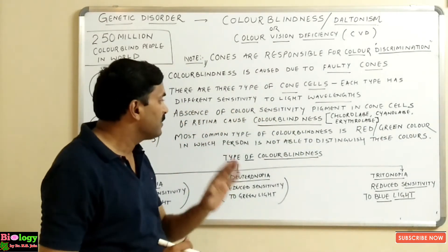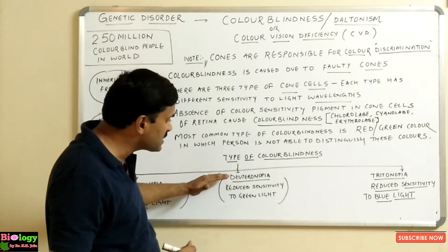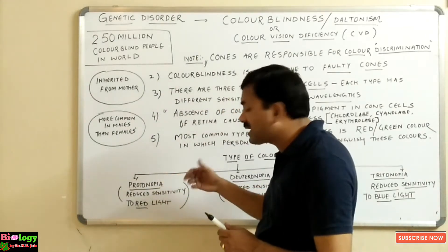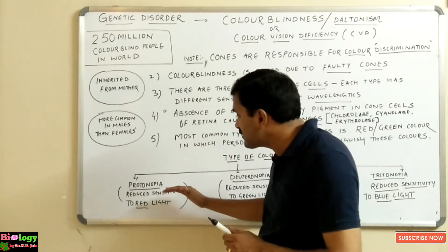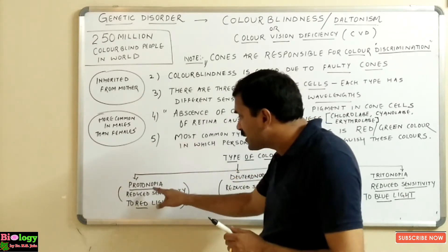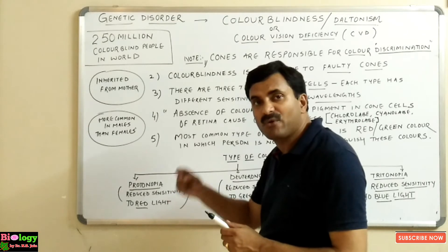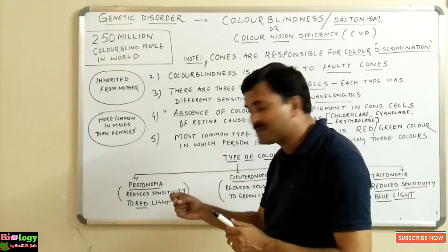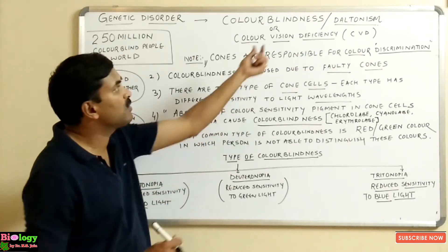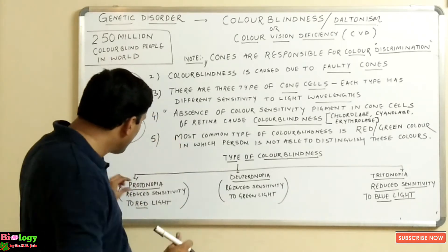There are three types of colorblindness. The first is protanopia, the second is deuteranopia, and the third is tritanopia. Protanopia is colorblindness for the red color, caused by reduced sensitivity to red light. Protanopia is basically called daltonism, and this name comes from John Dalton.